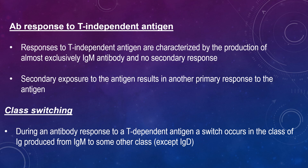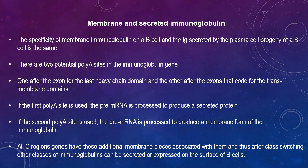The result of this recombination event is to bring the VDJ region close to one of the other constant region genes, allowing expression of a new class of heavy chain. Since the same VDJ gene is brought near to a different C gene, and since antibody specificity is determined by the hypervariable regions within the V region, the antibody produced after the switch will have the same specificity as before. Cytokines secreted by T helper cells can cause a switch to certain isotypes. There are two potential poly-A sites in the immunoglobulin gene: one after the exon for the last heavy chain domain and another after the exon for the transmembrane domains. If the first poly-A site is used, the pre-mRNA is processed to produce a secreted protein; if the second is used, it produces a membrane form of immunoglobulin. In all cases the same VDJ region is used, so the specificity of the antibody remains the same. All C region genes have these additional membrane pieces associated with them, and thus after class switching, other classes of immunoglobulins can be secreted or expressed on the surface of B cells.